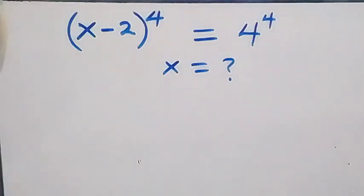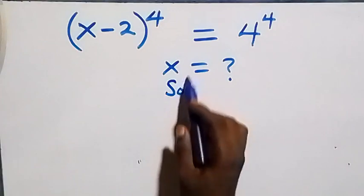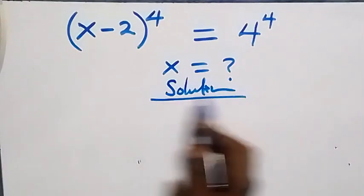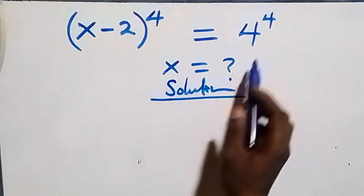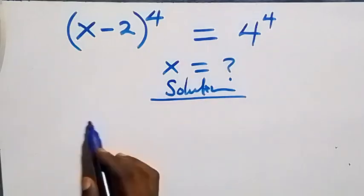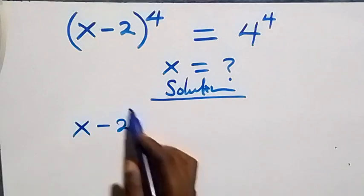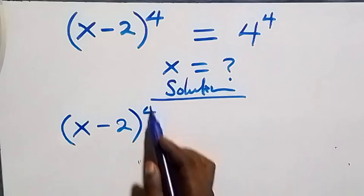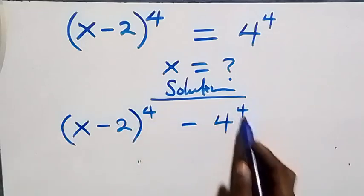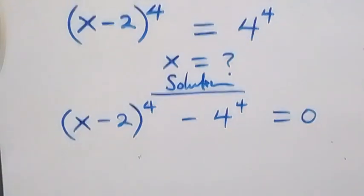Hello, you're welcome. How to solve this nice exponential equation. From here, we can take 4 raised to the power 4 to this side, and this becomes x minus 2. So 4 raised to power 4 minus 4 raised to power 4 equals to zero.